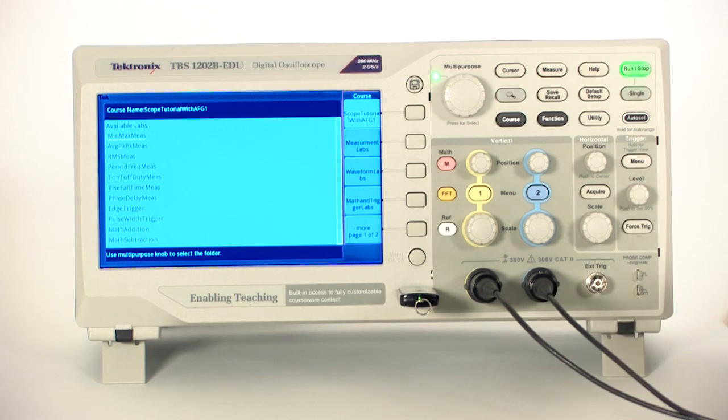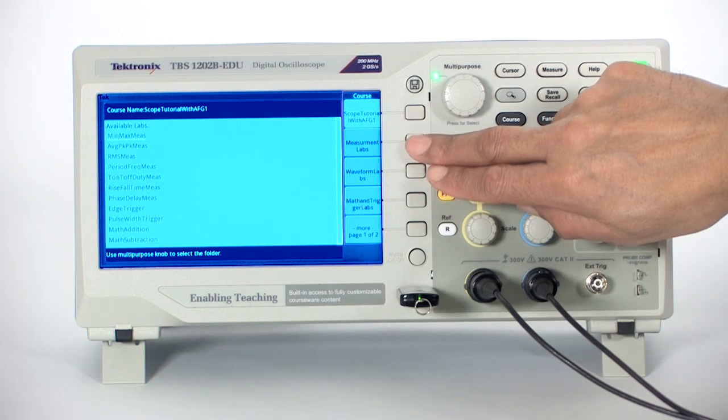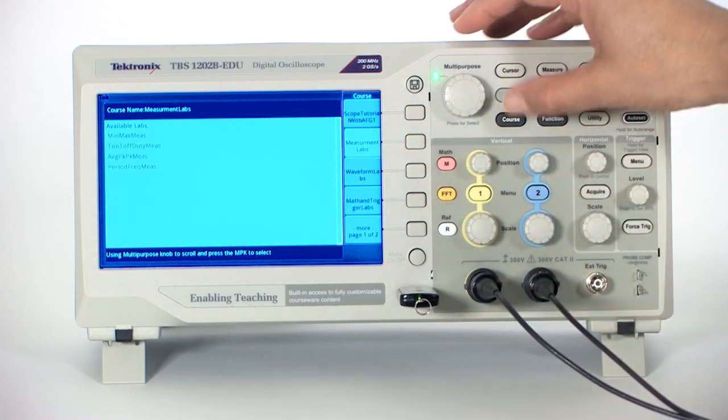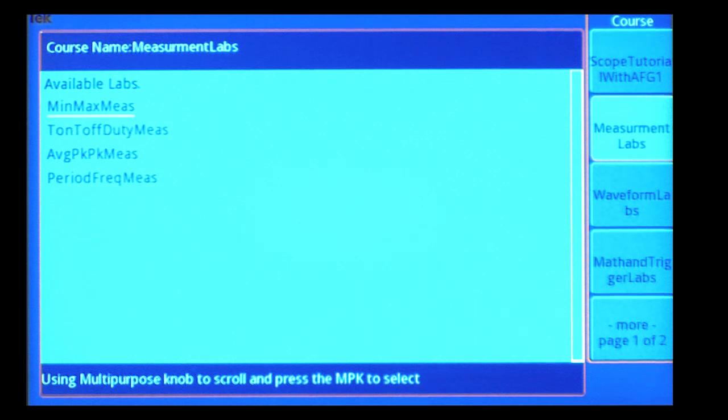Students will be able to select a course using the scope soft keys on the right and then select the appropriate lab using the multi-purpose knob. The TBS-1000B EDU can access up to 8 courses and each course can have multiple labs. The only limitation is that the entire XPackage file cannot exceed 100 megabytes, which can be easily monitored when the file is created in the PC courseware application.